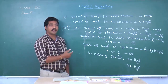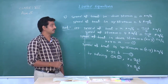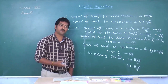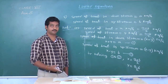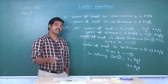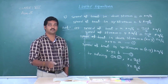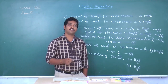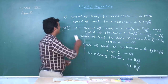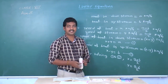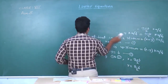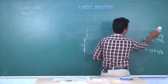From point four, if we are provided speed of the boat and speed of the stream, we can find speed of the boat in downstream and upstream. From point five, if speed of the boat in downstream and upstream are provided, we can find the actual speed of the boat and speed of the stream. These points four and five are very, very useful for solving the problems. Now we are going to see some problems based on these two points.